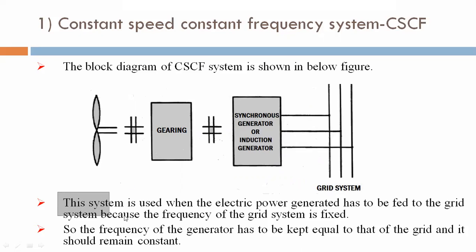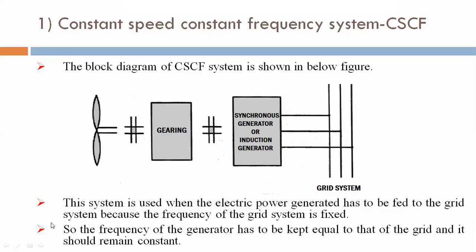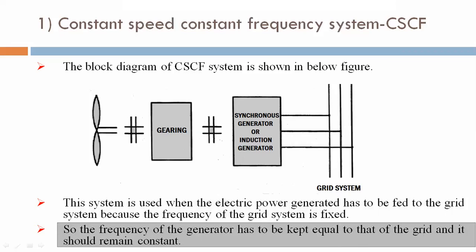This system is used when the electrical power generated has to be fed to the grid system, because the frequency of the grid system is fixed. So the frequency of the generator has to be kept equal to that of the grid and it should remain constant.